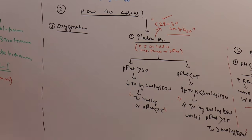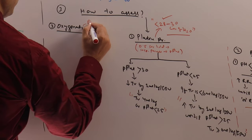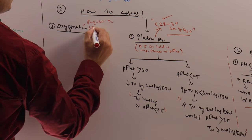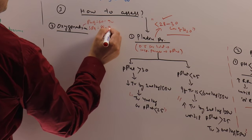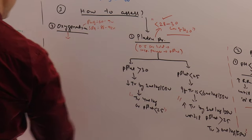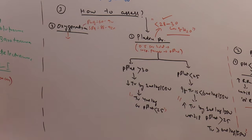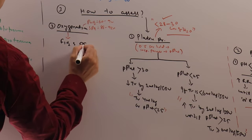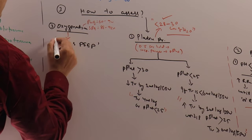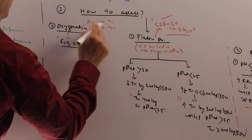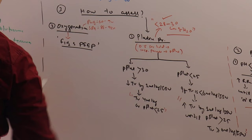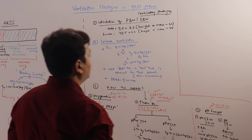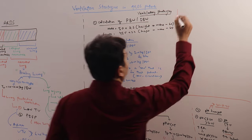We have a third target: the oxygenation target. Our oxygenation target is PO2 60 to 90 mmHg, or SpO2 88 to 92%. To achieve that, we fiddle with FiO2 and PEEP, as discussed in the last class, to maintain PO2 60 to 90 and SpO2 88 to 92%.